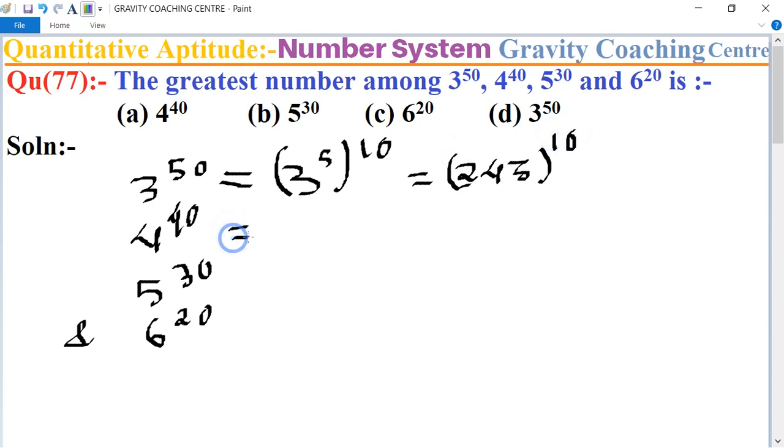For 4 to the power 40, we can write this as 4 to the power 4, to the power 10, which equals 256 to the power 10. Next, 5 to the power 30 equals 5 to the power 3, to the power 10, which is 125 to the power 10.